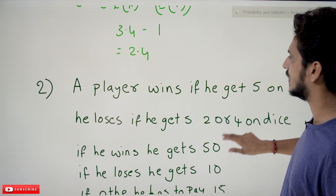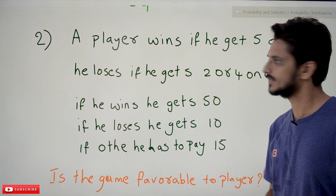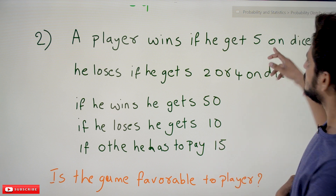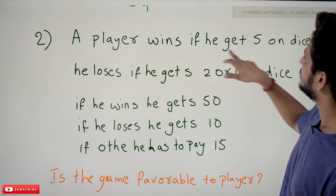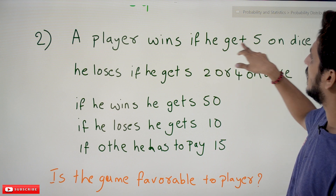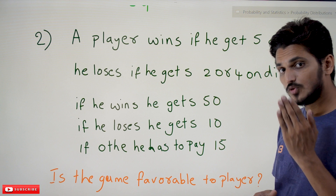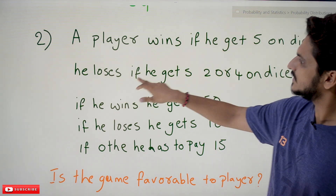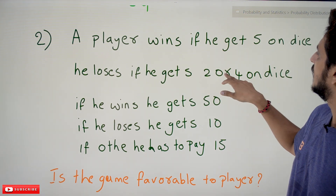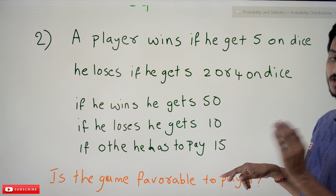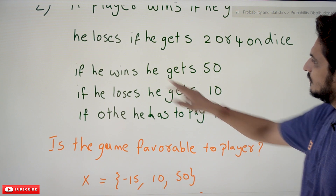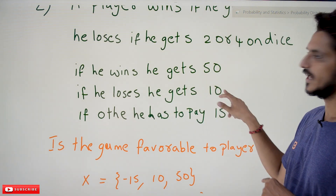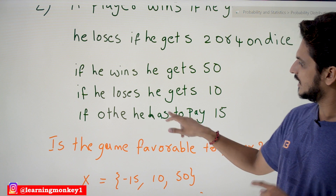Now coming to the second example — this is very important to understand. A player wins if he gets a 5 on a dice throw. He loses if he gets 2 or 4 on the dice. If he wins he gets 50 rupees; if he loses he gets 10 rupees; if any other value comes up he has to pay 15 rupees.